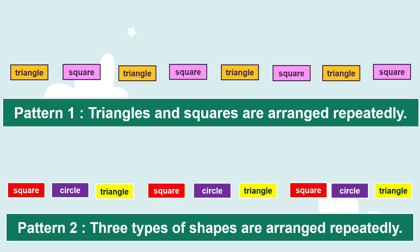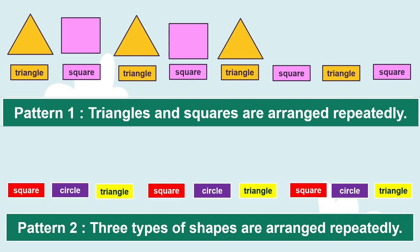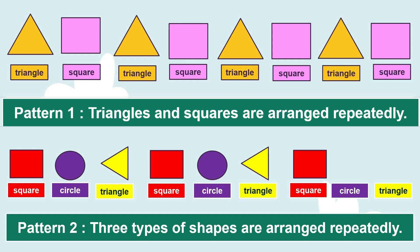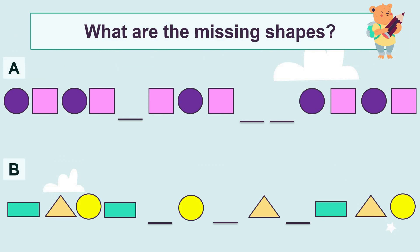Now let's learn about 2D shape patterns. Look at pattern 1 — triangles and squares are arranged repeatedly: triangle, square, triangle, square, triangle, square. Look at pattern 2 — three types of shapes are arranged repeatedly: square, circle, triangle, square, circle, triangle.